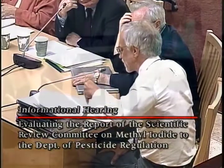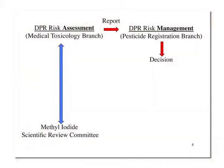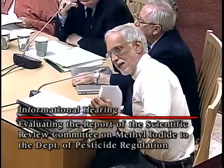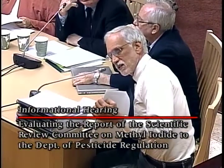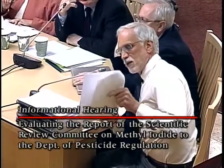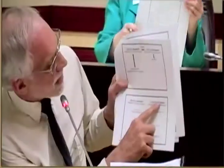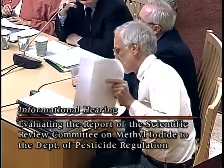Before I go through this, we've talked about these different groups within DPR, and I just want to make it clear on what the arrangement is. In slide number four, over to the left is DPR's risk assessment group — that's the medical toxicology branch. They're the group that we interacted with, indicated by the vertical arrow. They produced a report and passed it on to DPR's risk management group, who made the decision. In slide number five, I'm going to contrast DPR's risk assessment evaluation on the left with DPR's risk management decision on the right.